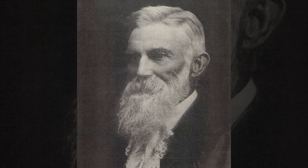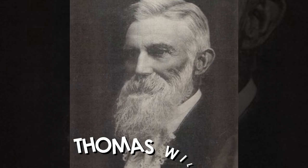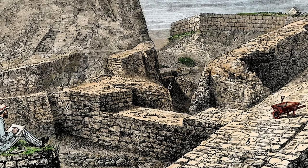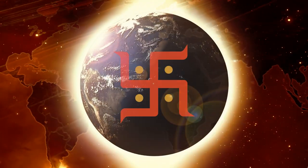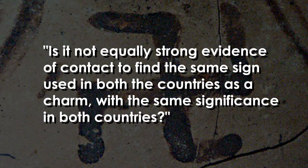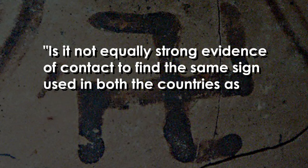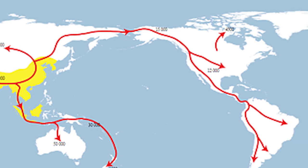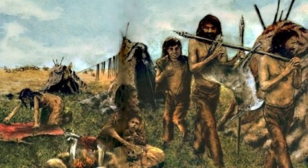In 1896, Thomas Wilson, an explorer of knowledge, wove the hypothesis that the Swastika's migration suggested an intimate connection between ancient civilizations. He marveled at the idea that this symbol of religion traveled across vast oceans, carried by human hands that bridged distant lands. 'Is it not equally strong evidence of contact,' he pondered, 'to find the same signs used in both countries as a charm, with the same significance?' It became a tangible piece of evidence in the tapestry of human migration — a silent witness to the interconnectedness of our ancestors.